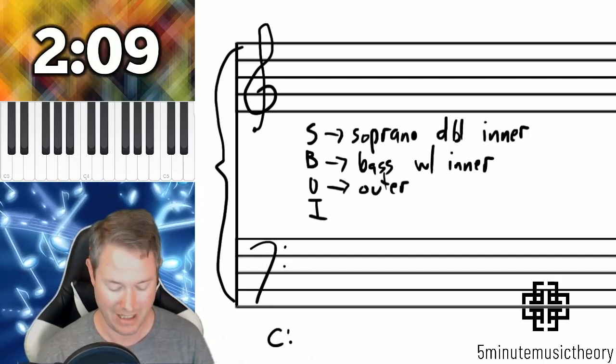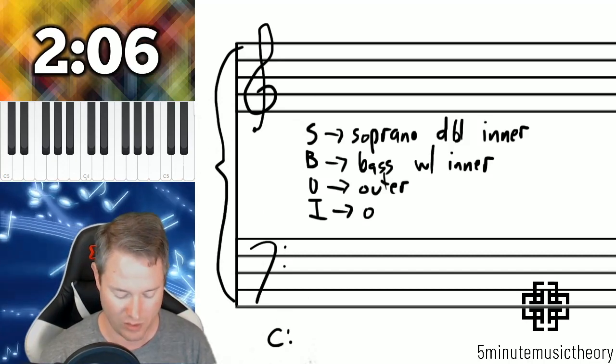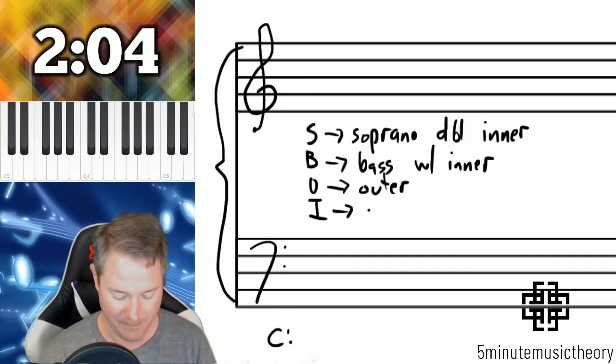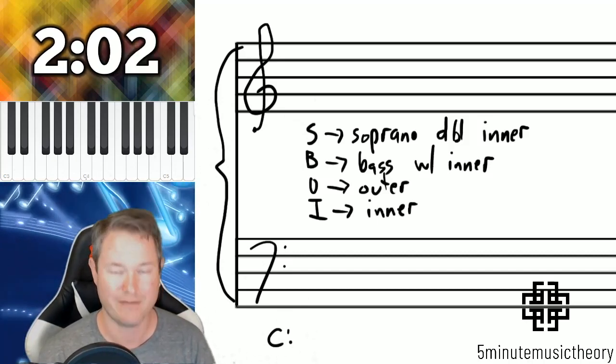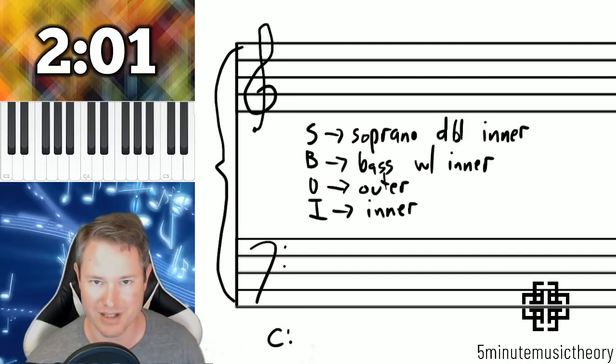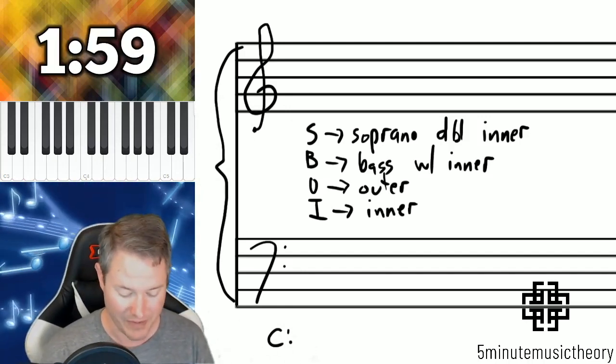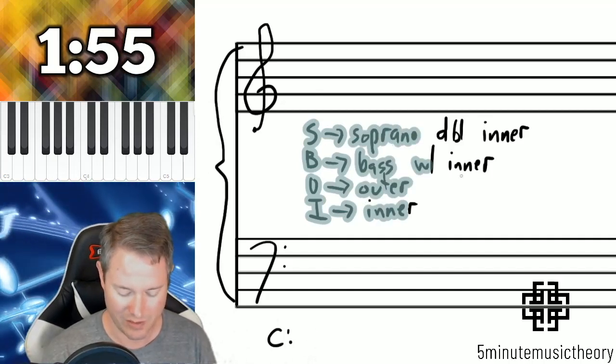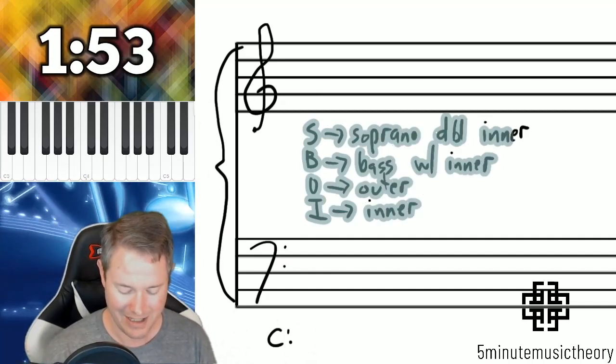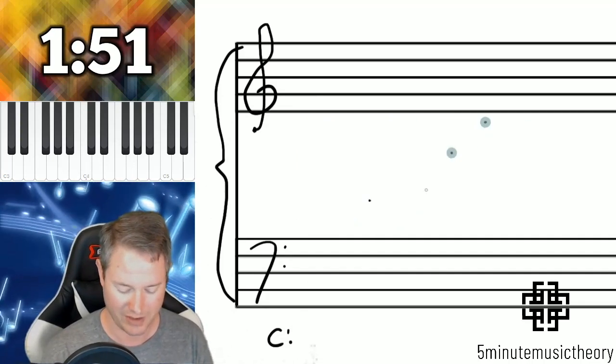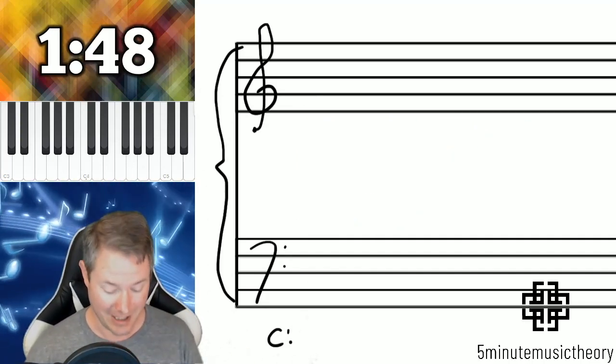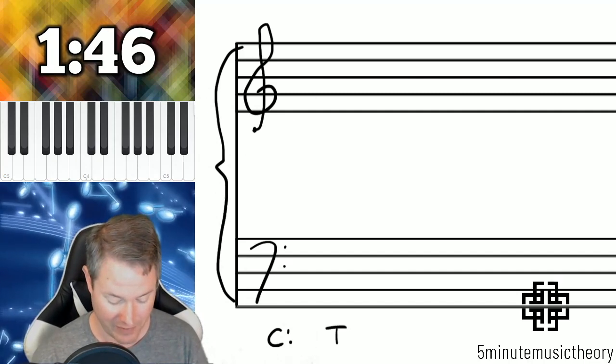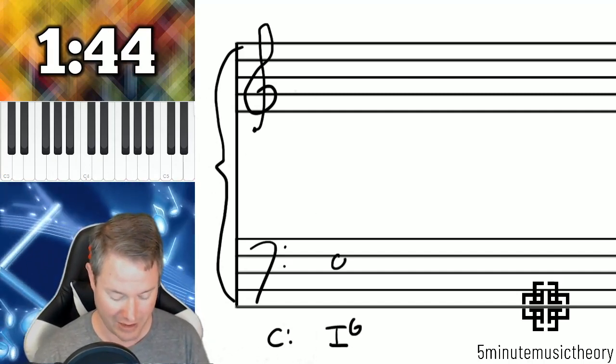If you can't do that, then you double the outer voices. And if you can't do that, the last resort is to double the inner voices. You almost never have to go that far to where you have to double the inner voices, that's the weakest doubling possible. So when I'm grading papers from music theory students, when I see that they didn't go through their SBOI checklist when they're writing a first inversion triad, then I'll usually mark them down for that.